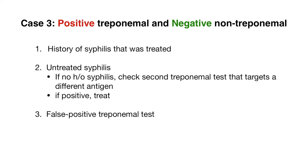Case three uses the reverse screen: a positive treponemal test followed by a negative non-treponemal test. This can indicate that the patient had syphilis that was treated — their non-treponemal titers are now negative but their treponemal test remains positive for life. However, if the patient reports no history of treated syphilis, you begin to wonder why the treponemal test was positive, since the treponemal test is more specific and false positives should occur less often.